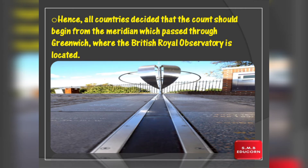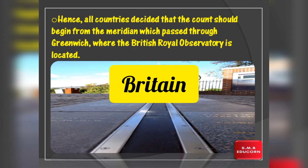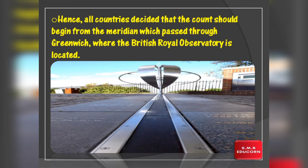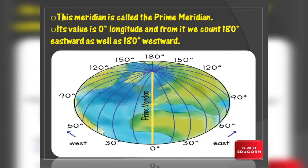Kaunse meridian of longitude ko main meridian maane. Toh is problem ko solve karne ke liye, sari countries ne agree kiya ki hum us meridian se count shuru karenge jo Greenwich, Britain se pass karti hai. Aur yahan par British Royal Observatory bhi located hai, is liye ye place important bhi tha. And this meridian is called the prime meridian, aur Greenwich meridian also. And its value is zero degree longitude. Aur is prime meridian, that is zero degree longitude, ki eastward 180 longitudes hai aur westward bhi 180 longitudes hai. This means we have total 360 longitudes.